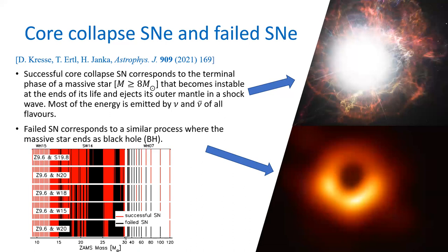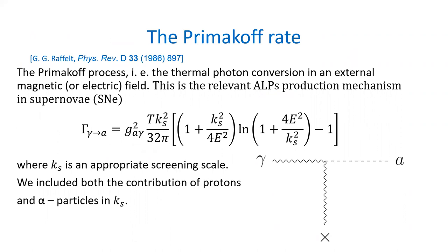The percentage depends on different models, and we don't actually know what the real percentage is. In this supernova environment, it is possible to evaluate the Primakov rate — the rate of Primakov process production — which is the Γ_γγ term shown in the central part of the slide. It is proportional to the coupling constant squared and the temperature, and it is related to the term K_s, an appropriate screening length. We take into account not only protons but also alpha particles as targets, and their contribution is evaluated within K_s itself.